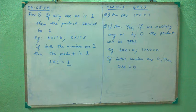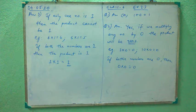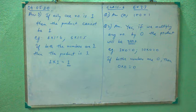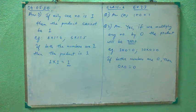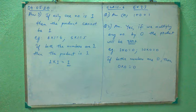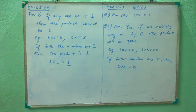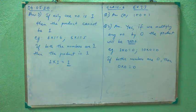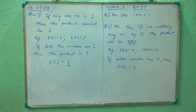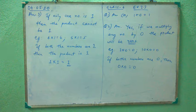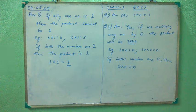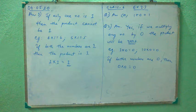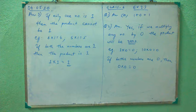Now we will start Exercise 2.3. Question 1: which of the following will not represent 0? 1 plus 0 equals 1. 0 into 0 equals 0. 0 divided by 2 equals 0. And 10 minus 10 by 2 equals 0. So answer is A: 1 plus 0 is not equals to 0.